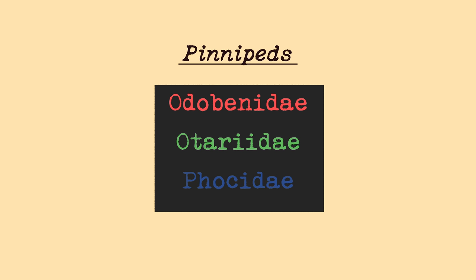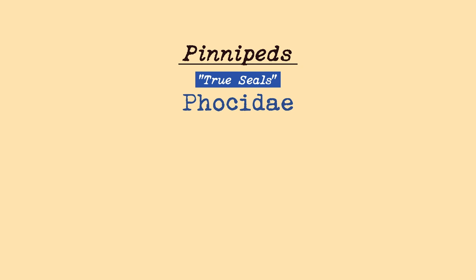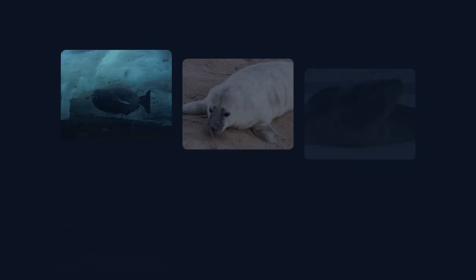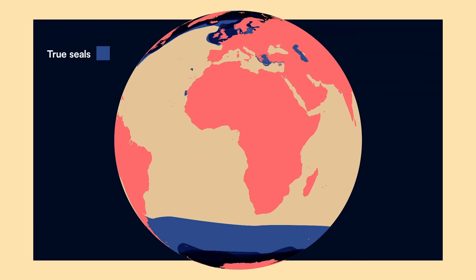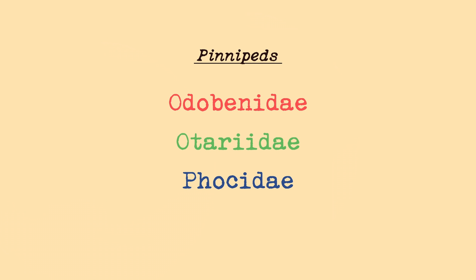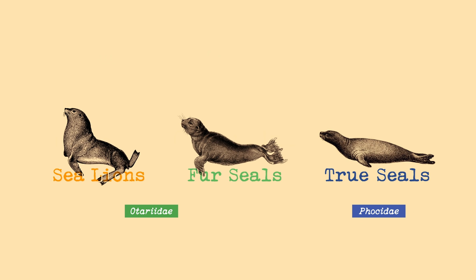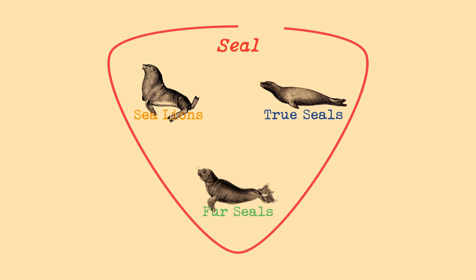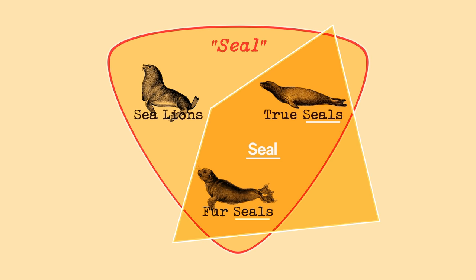The third pinniped family is Phocidae, the true seals. There are 18 species of true seals — these are probably the seals you think about when you think about seals. Our main three groups are sea lions, fur seals, and true seals. This means fur seals are more closely related to sea lions than they are to true seals, which can get confusing. Seal is a word that can refer to any of them, technically, and even more technically to both fur seals and true seals. So they're all seals, but only some are true seals — this is because scientists enjoy confusing the youth.